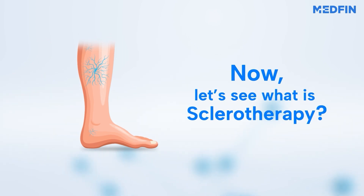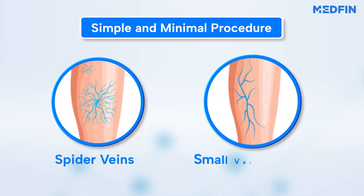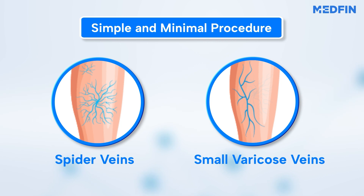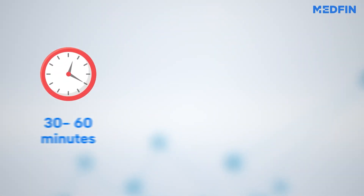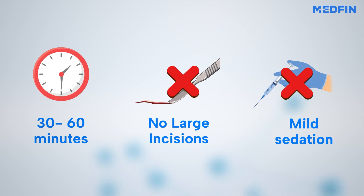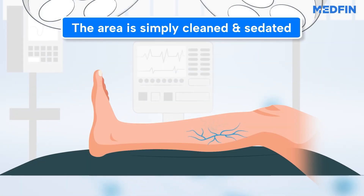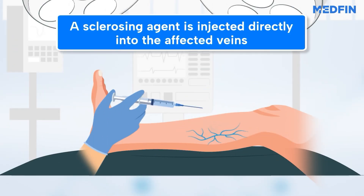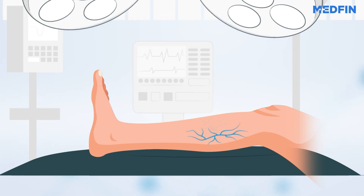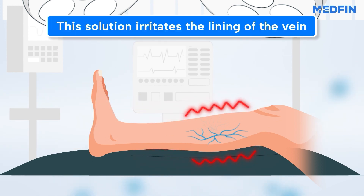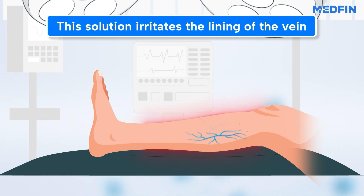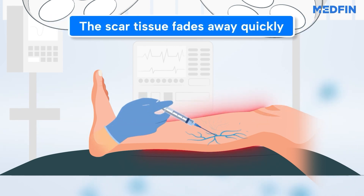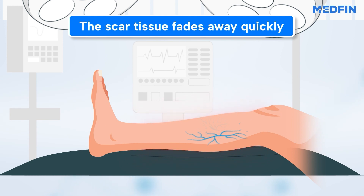Now let's talk about Sclerotherapy — a simple yet effective solution for spider veins and small varicose veins. This same-day procedure typically takes less than an hour and requires no sedation or anesthesia. Instead, the area is simply cleaned and prepared for injection. Using a fine needle, a sclerosing agent is injected directly into the affected veins. This solution irritates the lining of the vein, causing it to collapse and stick together — it's actually quite a gentle process. After the vein collapses, it turns into scar tissue and starts to fade away.